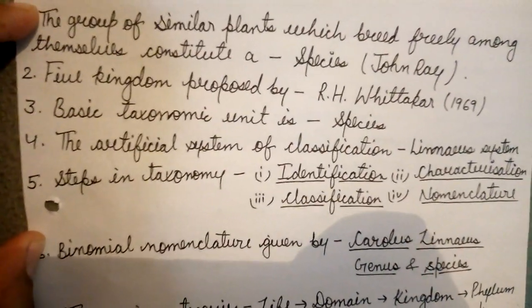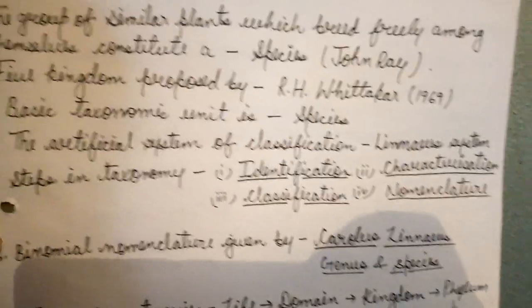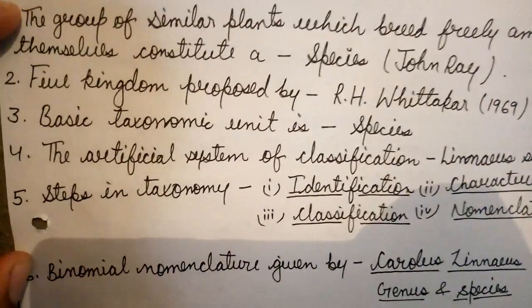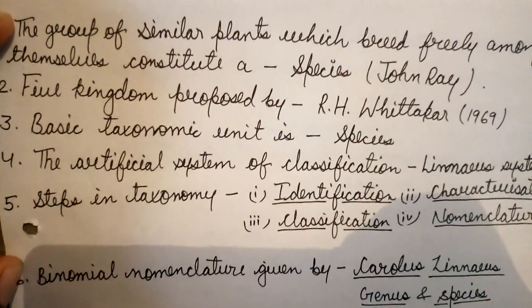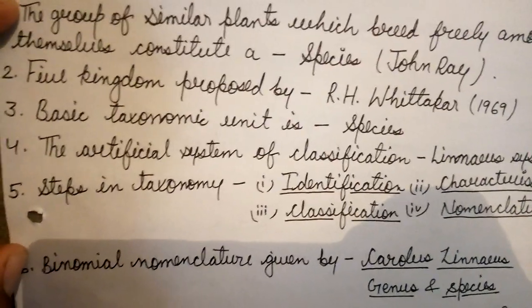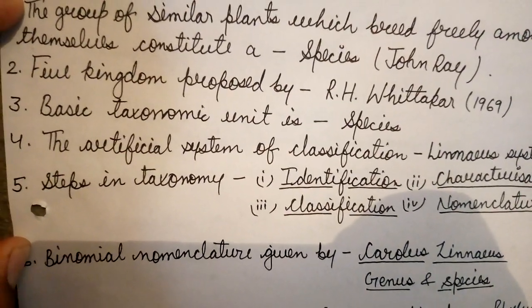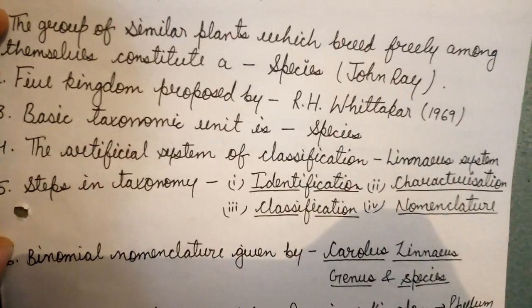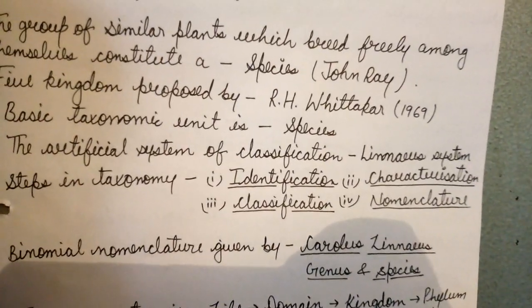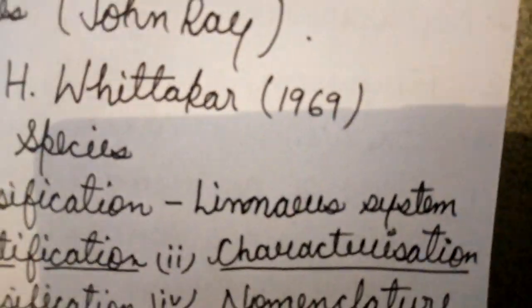Five kingdoms were proposed by R.H. Whittaker in 1969. The basic taxonomic unit is called species. The artificial system of classification was given by the Linnaean system.